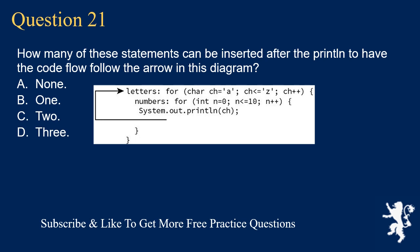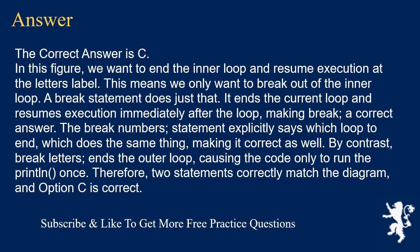Question 21. How many of these statements can be inserted after the println to have the code flow follow the arrow in the diagram? Options: break, break numbers, break letters. A. None. B. 1. C. 2. D. 3. The correct answer is C. We want to end the inner loop and resume execution at the letters label. A plain break statement ends the current loop and resumes execution immediately after it, making break a correct answer. The break numbers statement explicitly says which loop to end, doing the same thing. By contrast, break letters ends the outer loop. Therefore, two statements correctly match the diagram.